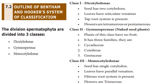Outline of Bentham and Hooker's system of classification. The division Spermatophyta is divided into three classes: Dicotyledon, Gymnosperm, and Monocotyledon.